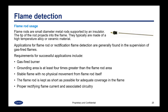Flame rods are small diameter metal rods supported by an insulator, with the tip of the rod projecting into the flame. They are typically made of a high temperature alloy or ceramic material. Applications for flame rod or rectification flame detection are generally found in the supervision of gas-fired flames. Requirements for successful applications typically include that it's a gas-fired burner, the grounding area is at least four times greater than the flame rod area, a stable flame with no physical movement from the flame rod itself, the flame rod is kept as short as possible for adequate coverage, and proper rectifying flame current and associated circuitry are provided.